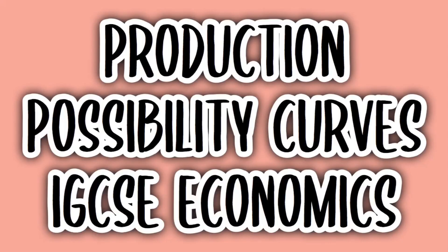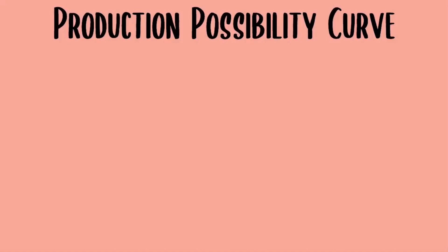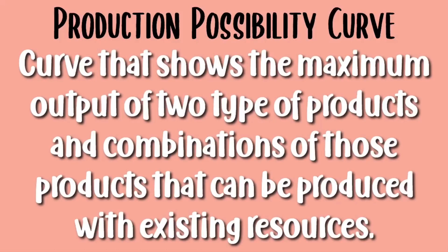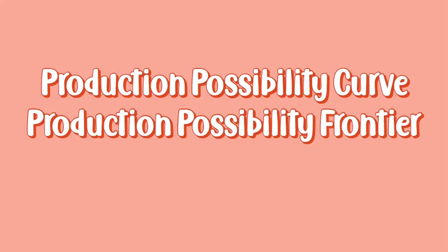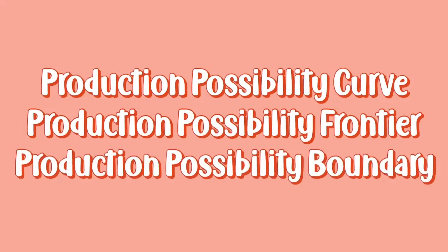In this video I'll be talking about the production possibility curves. A production possibility curve is a curve that shows the maximum output of two types of products and the combinations of those products that can be produced with the existing resources. It is also known as the production possibility frontier or production possibility boundary.